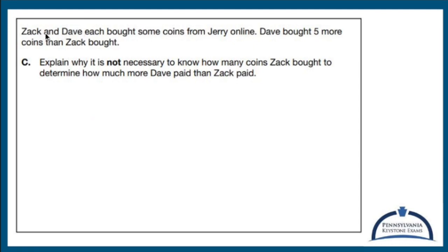Zach and Dave. Oh, two new people. We got Jerry, Zack and Dave. They each bought some coins from Jerry online. Dave bought five more coins than Zack bought. Explain why it is not necessary to know how many coins Zack bought to determine how much more Dave paid than Zack.